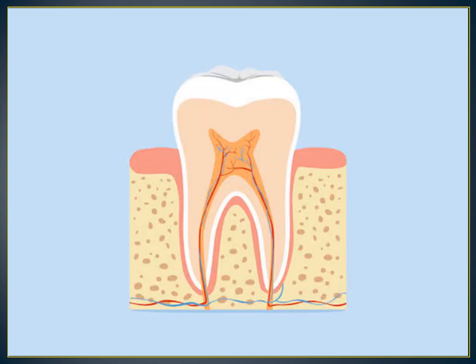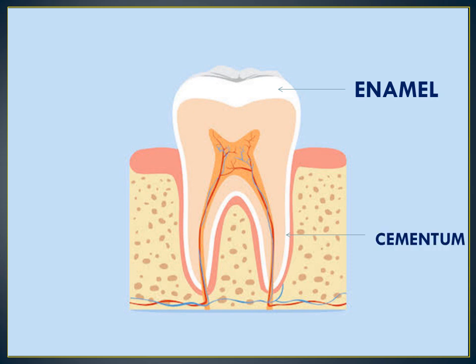The outermost layer of the tooth is called enamel. As we can see in this picture, this is enamel. And the outermost layer of the root portion of the tooth is called cementum. The junction or the point where the enamel and cementum meet is known as cemento-enamel junction.